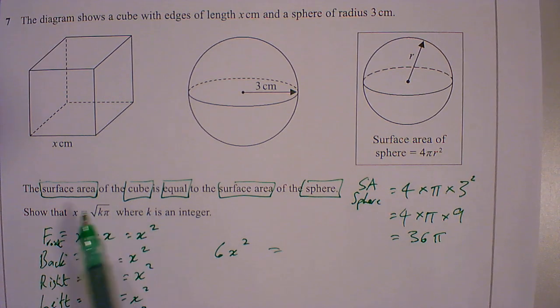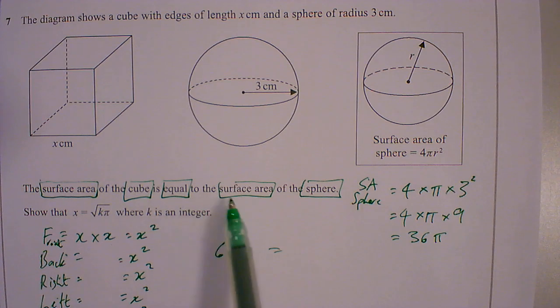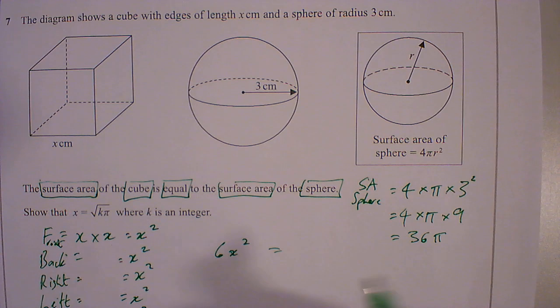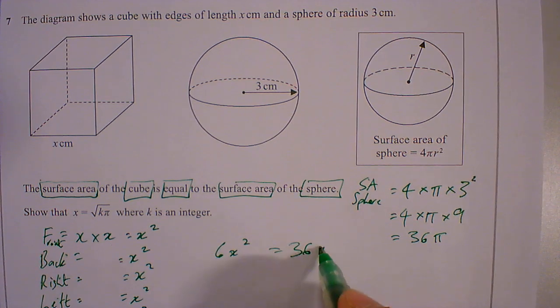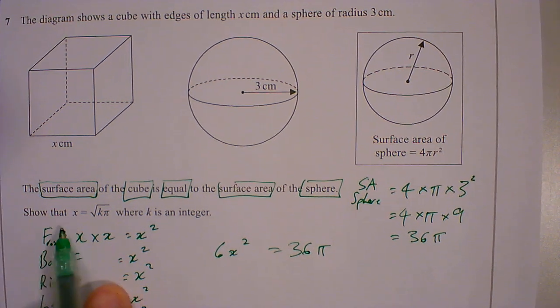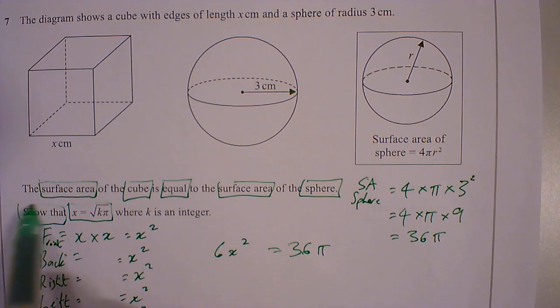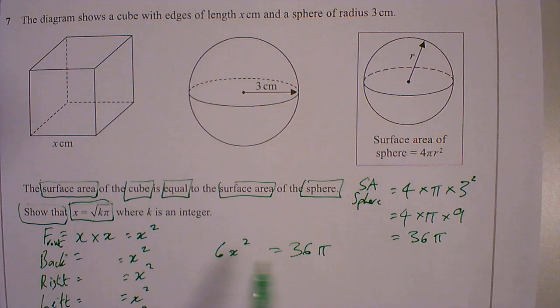So the surface area of the cube is equal to the surface area of the sphere. So this equals to that, 36π. Show that. So it's giving us the answer. We want to get to that. Show that means we have to show this. So now I need to somehow do this.